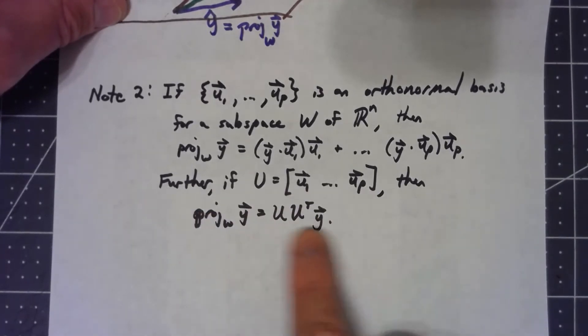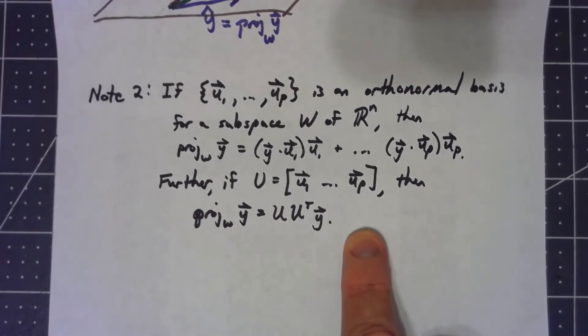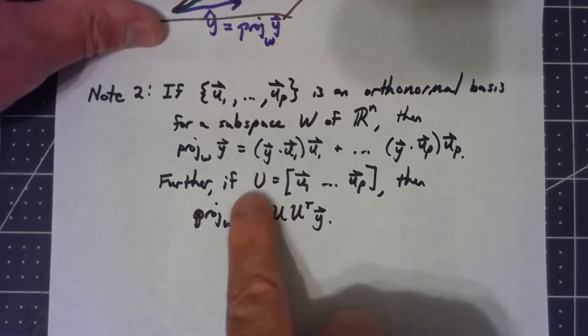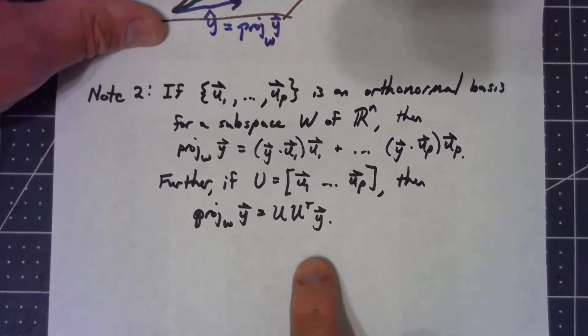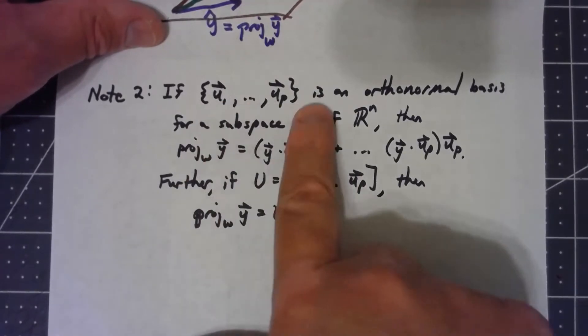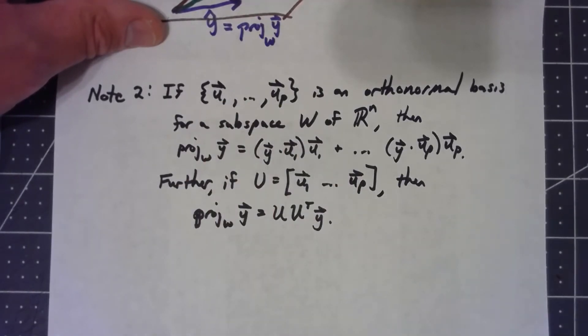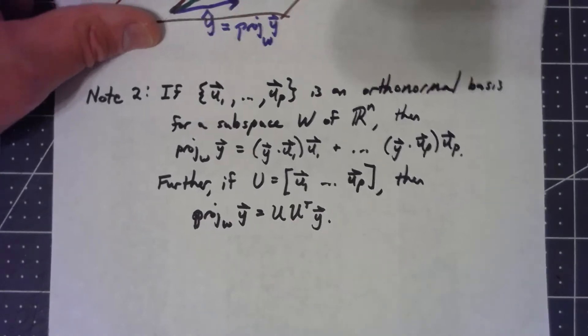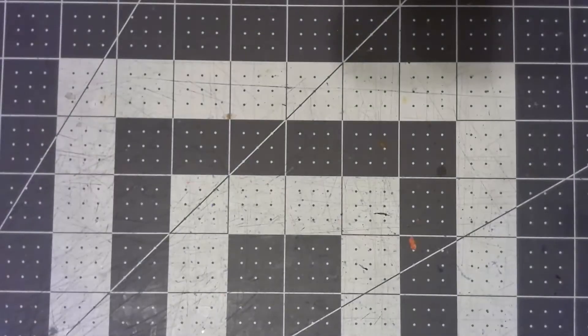But let's focus on the second part. Further, if we create a matrix out of making the columns those orthonormal basis vectors, we can compute the projection onto the subspace by doing U U transpose times Y.